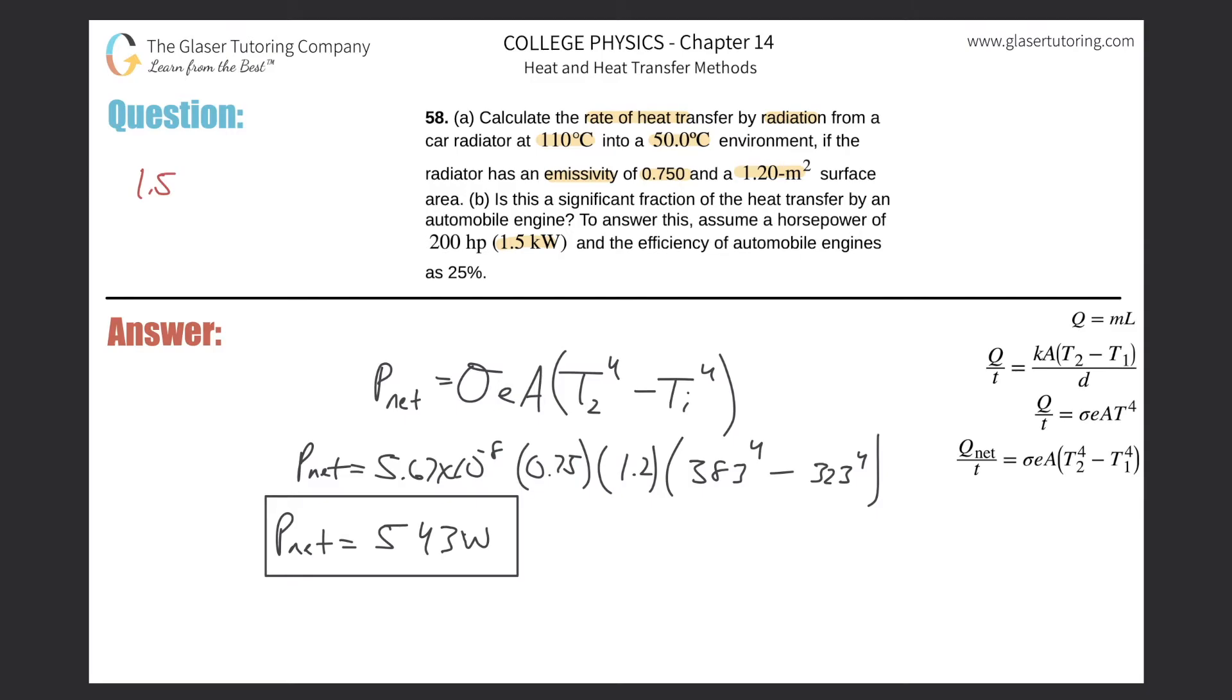1.5 kilowatts divided by 0.25, and that will get us—basically we're multiplying that by four—so this is 6 kilowatts. A quarter of this is going to useful work, and then the other three quarters is going to heat being lost.